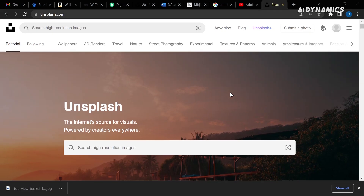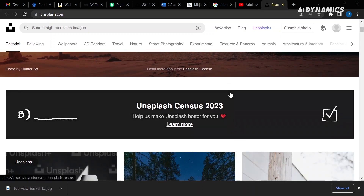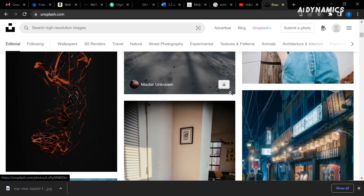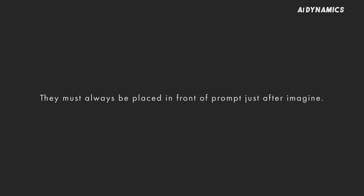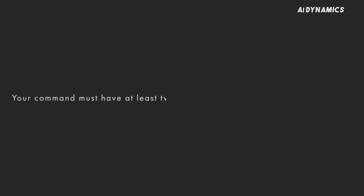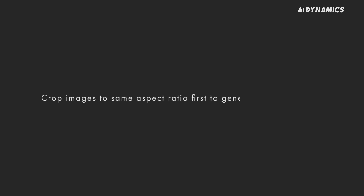By the way, I downloaded both these images from Unsplash, which is a stock photo website with a huge amount of commercial-free images. A few points to remember: your images must end in JPG, PNG, or GIF. They must always be placed in front of the prompt, just after 'imagine.' Your command must have at least two images or an image and a text to work. Crop images to the same aspect ratio first to generate better results.